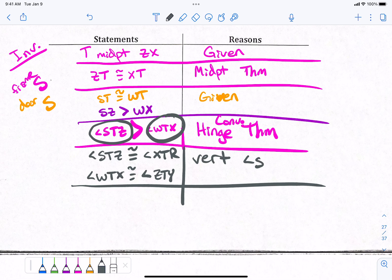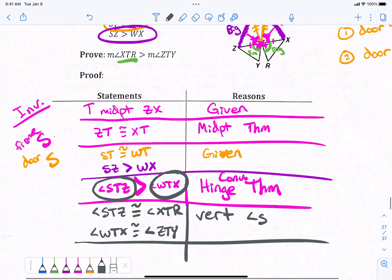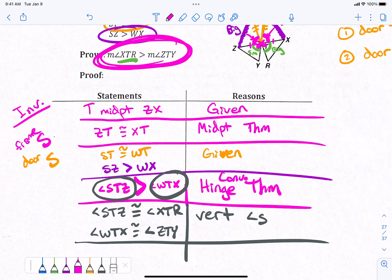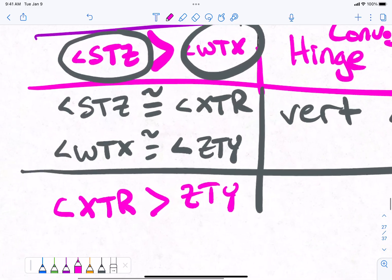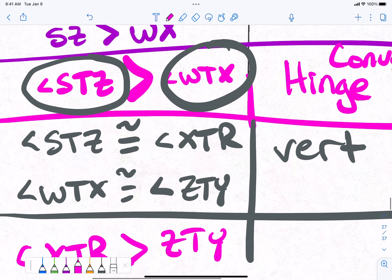Because vertical angles are across from each other. We're done? We're almost done. Because our last step has to be this one right here, right? Okay? So, let's say angle XTR is congruent, not congruent, is greater than ZTY. That's what our last step has to be, right? Okay? We knew from this step. How do we know?